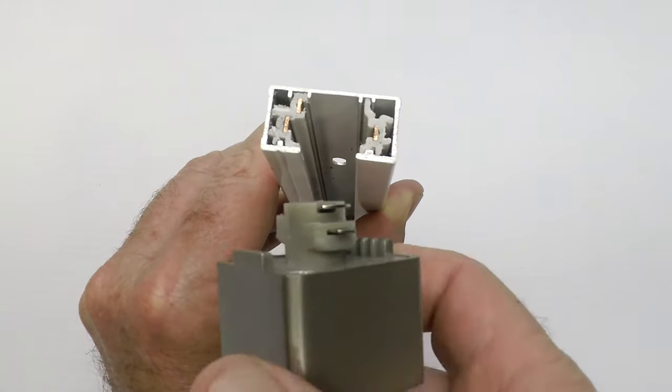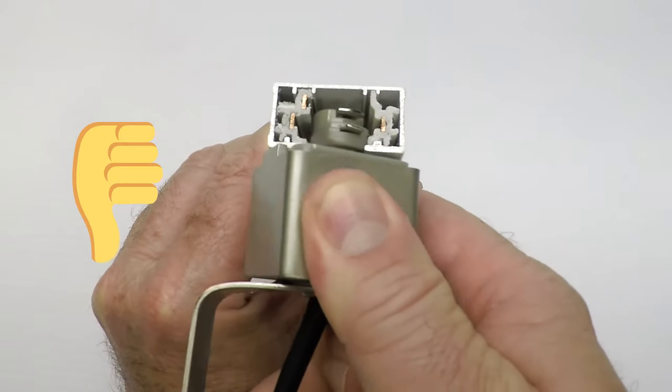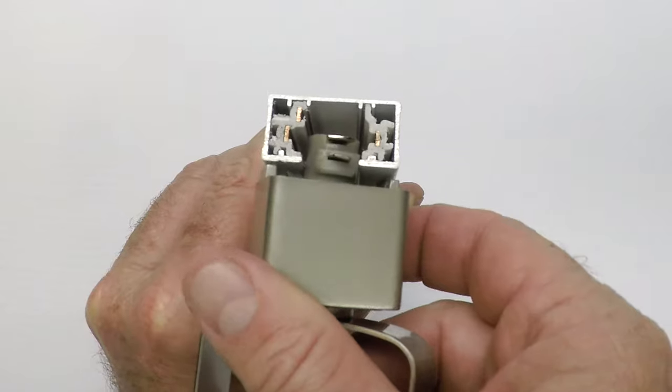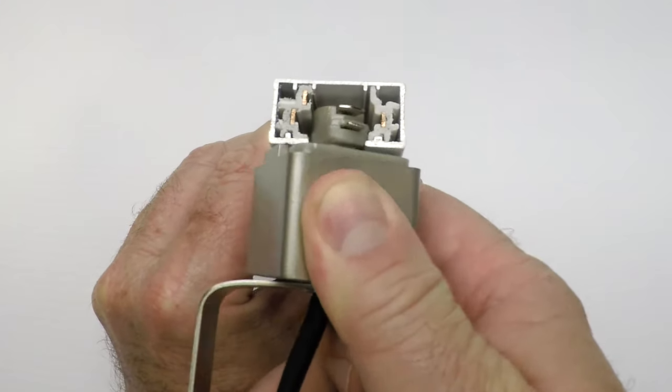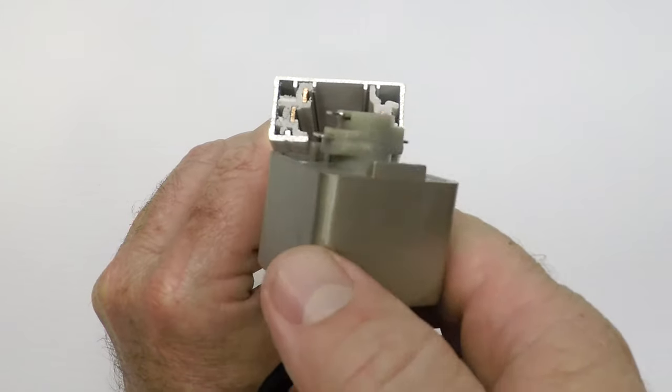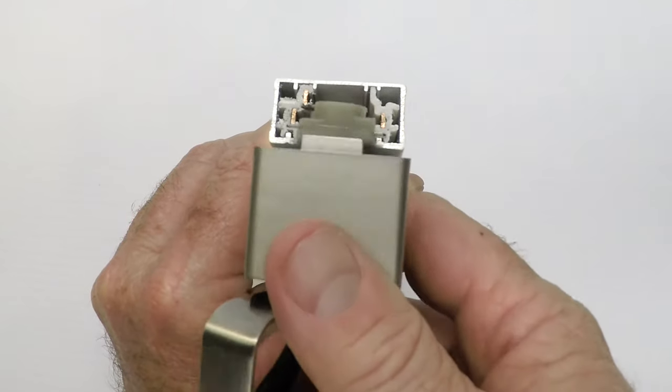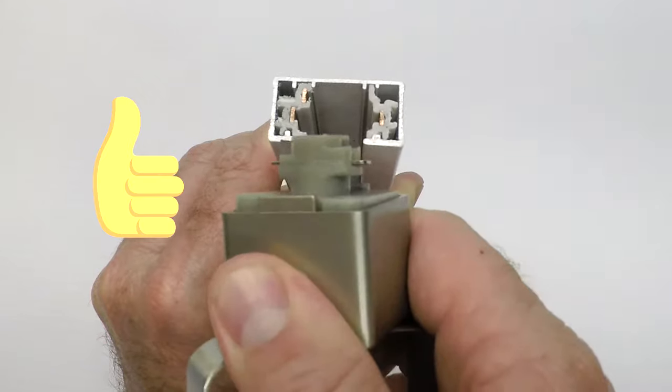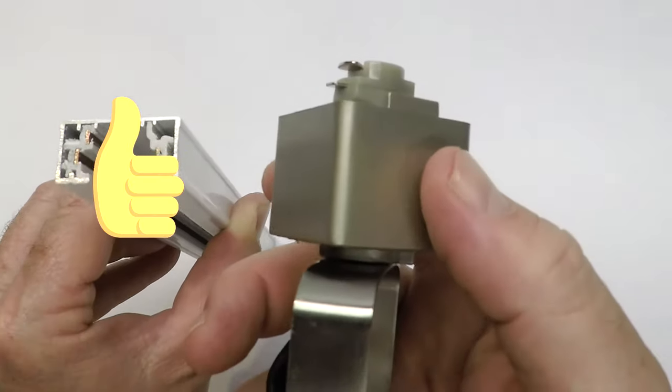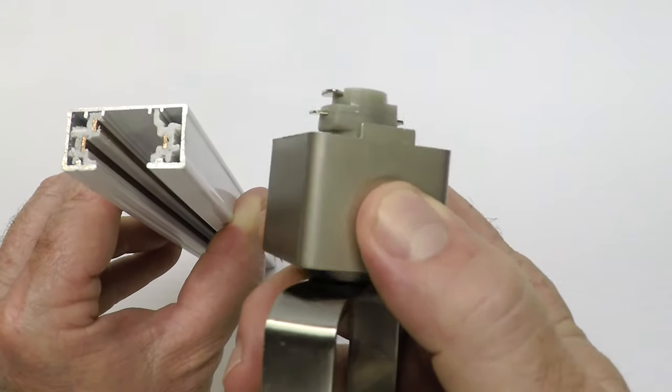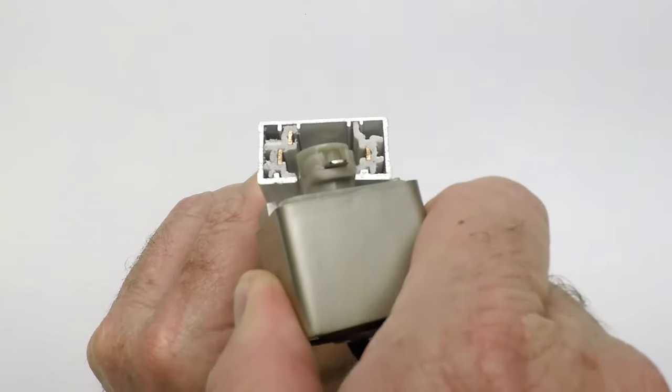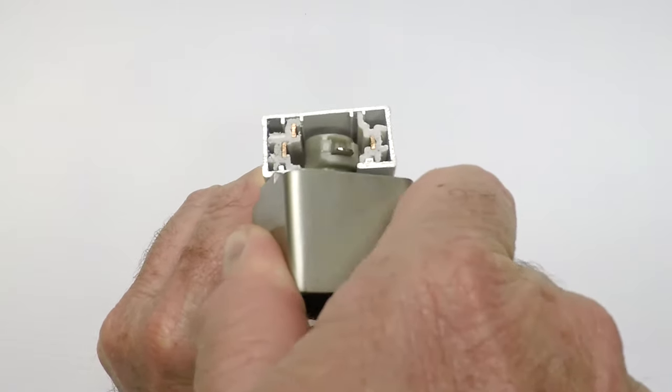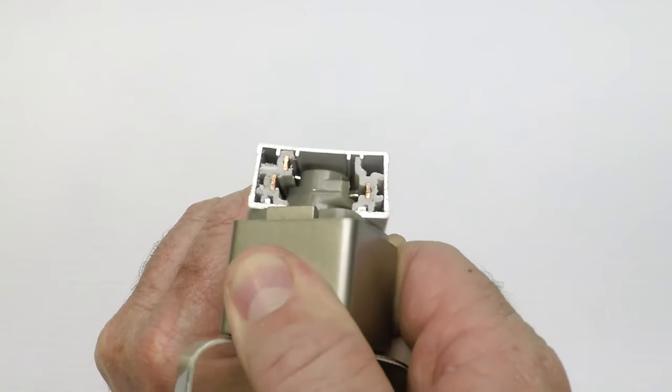Taking the light fixture and putting it in the track wrong like this, something is going to give and something is going to bend. Don't do that. Make sure you know that when you put your light fixture in the track, you're going to line everything up correctly. So on this fixture I have to pull back this little shroud. See that? It's going back and forth. I can make it squeak. Pull it back.